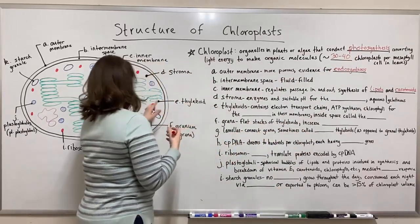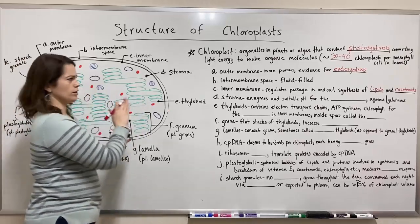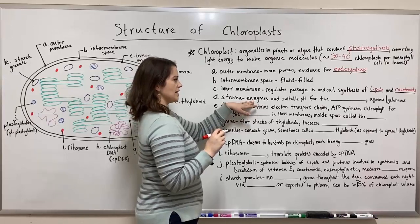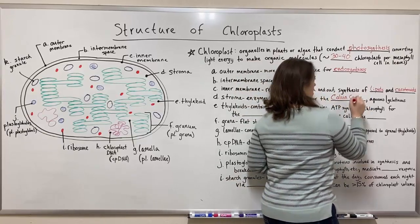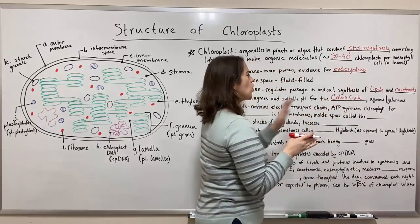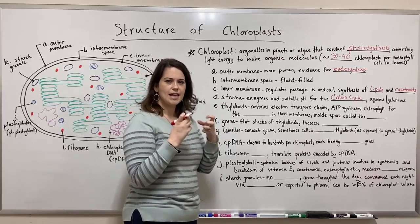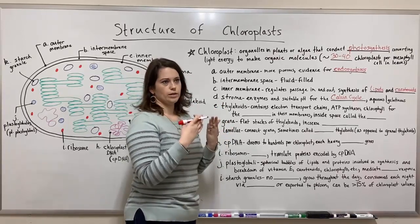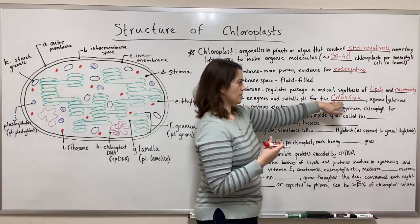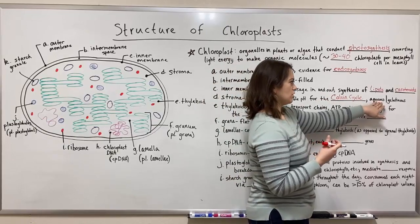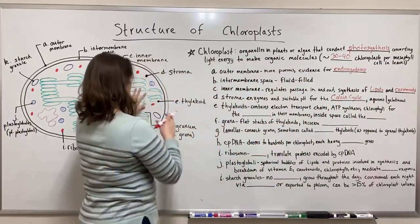Next we'll talk about the stroma. The stroma is the fluid-filled compartment inside the inner membrane where all this other stuff is located. It also has the correct enzymes and a suitable pH for the Calvin cycle. The Calvin cycle, also known as the light-independent reactions or sometimes called the dark cycle, is where carbon dioxide is fixed into an organic form that eventually supports the synthesis of glucose and other organic molecules. The stroma is quite aqueous or fluid-filled and can have a gelatinous consistency because of all the material dissolved in it.